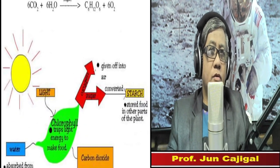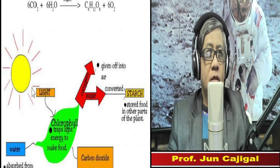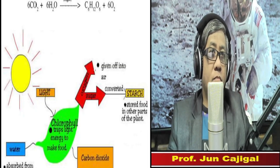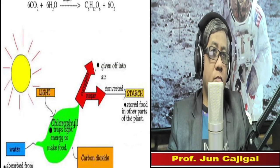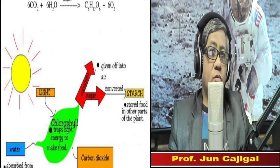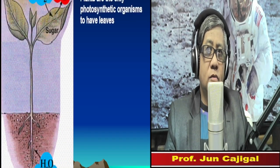Let's take a look at the PowerPoint slide showing the general formula for photosynthesis. We have carbon dioxide from the atmosphere and water absorbed from the soil by the roots, which combines with the help of light energy from the sun. The products are sugar C6H12O6, and oxygen is released as a waste gas.